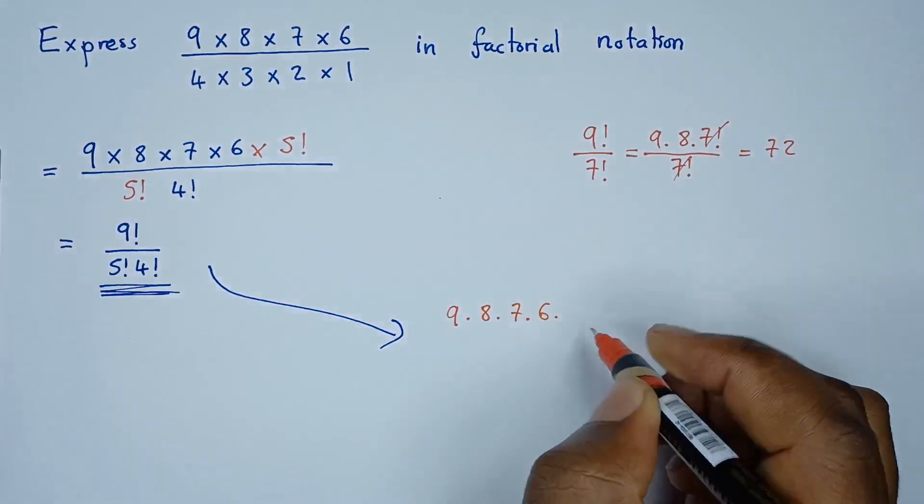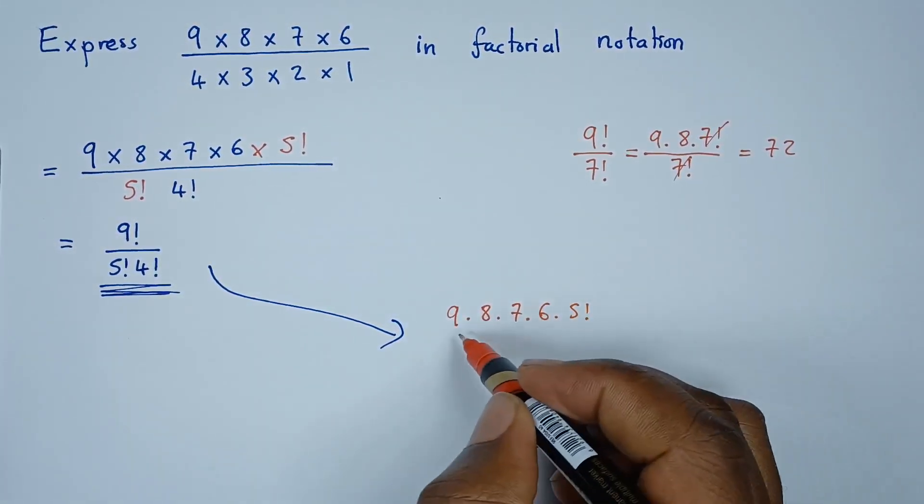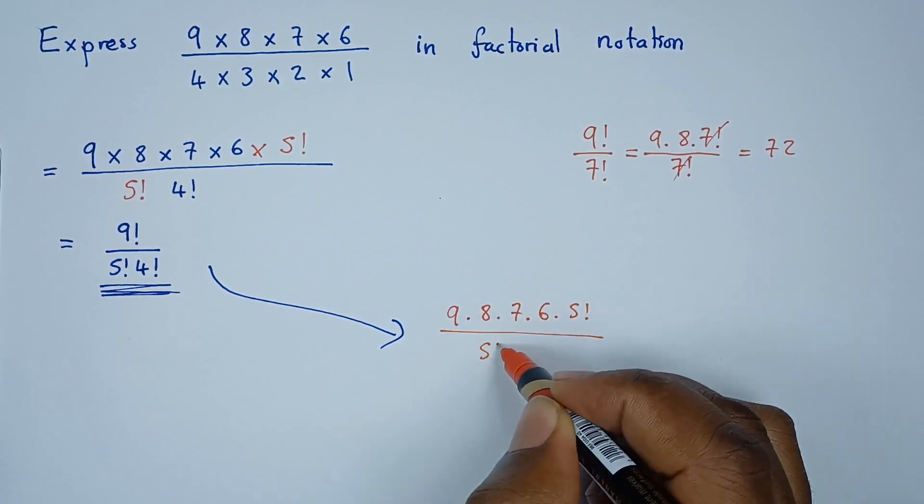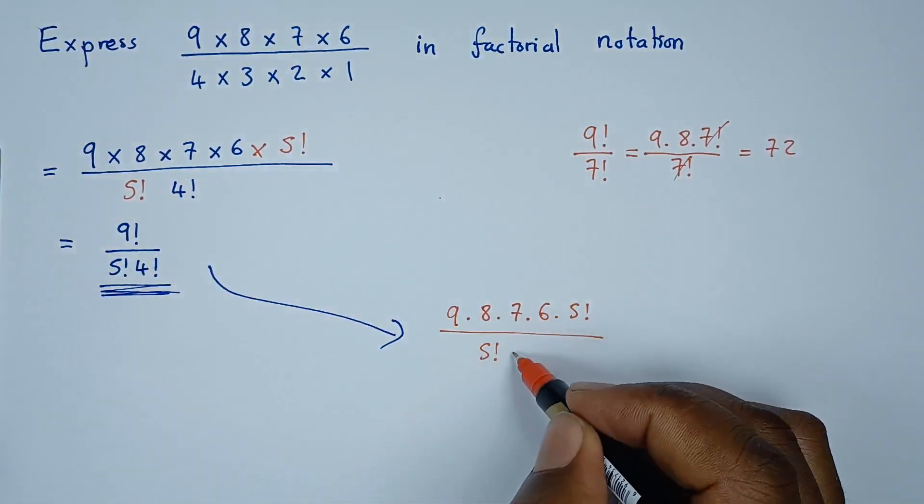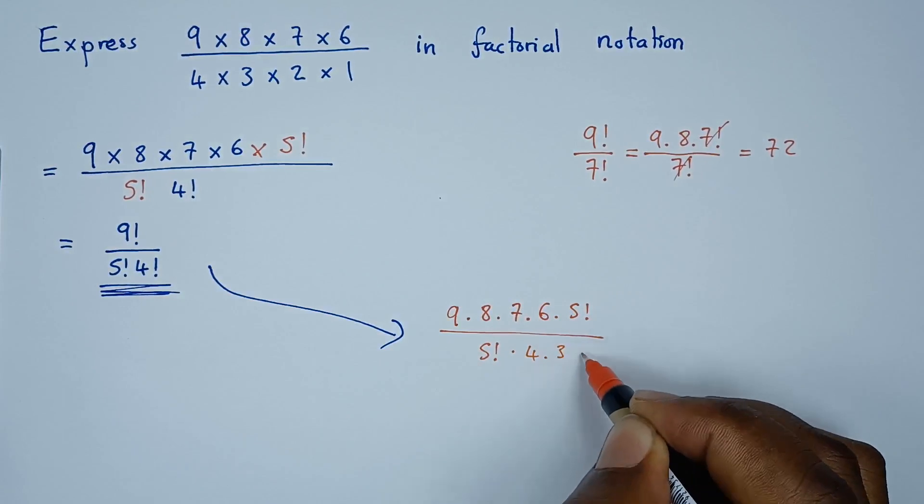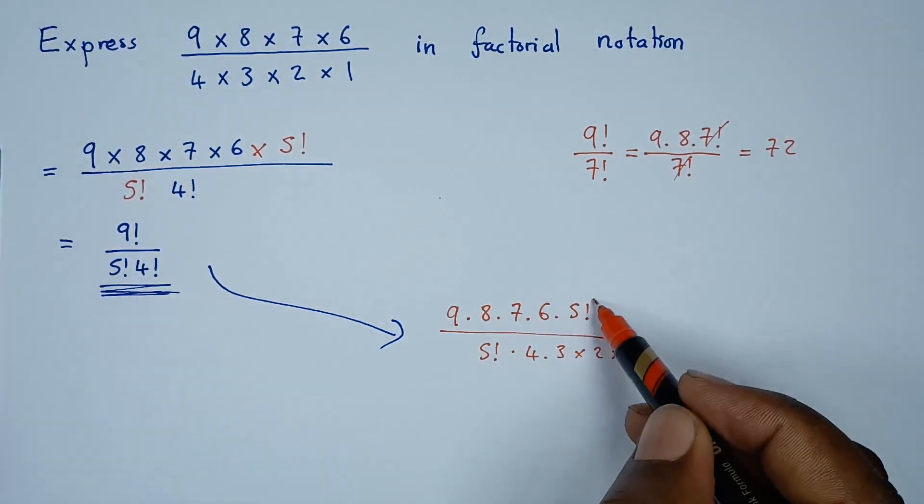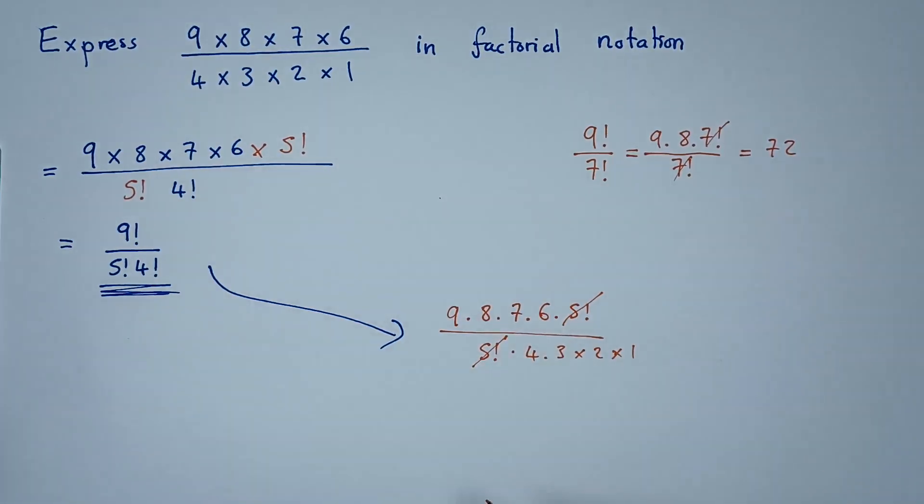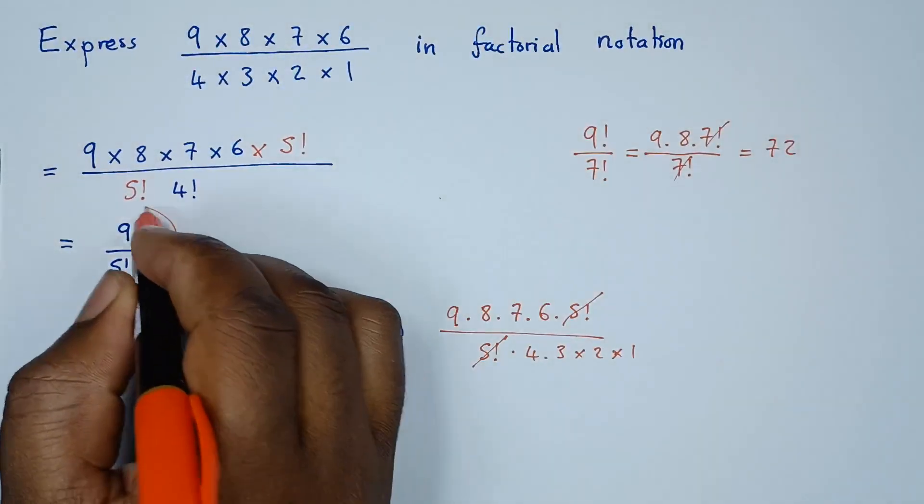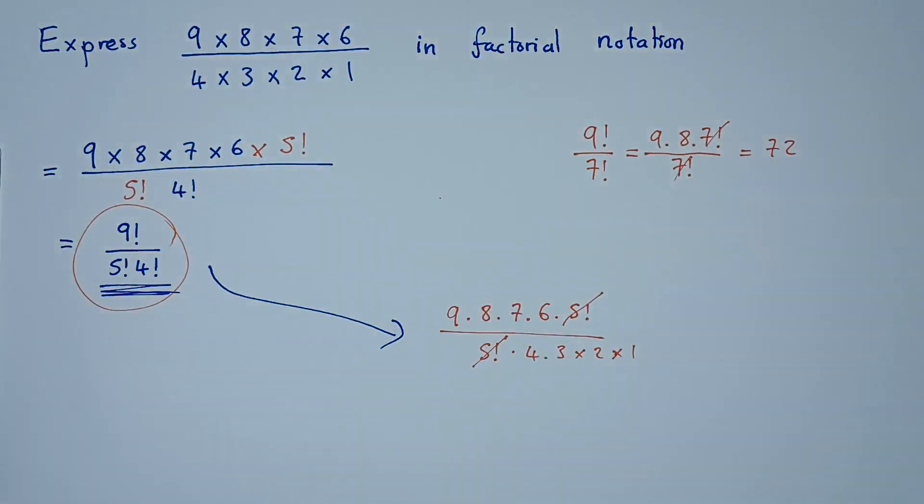Divided by 5 factorial times 4 factorial. 4 factorial is the same as 4 times 3 times 2 times 1. So you see that the 5 factorial cancels with 5 factorial, leaving us with 9 times 8 times 7 times 6 over 4 times 3 times 2 times 1. So this is just the same as that. This is our answer. Thank you very much.